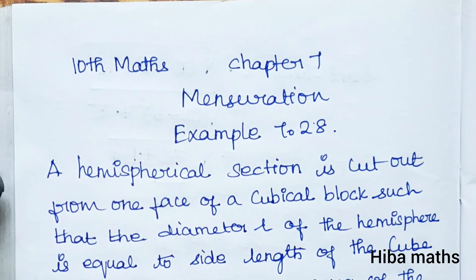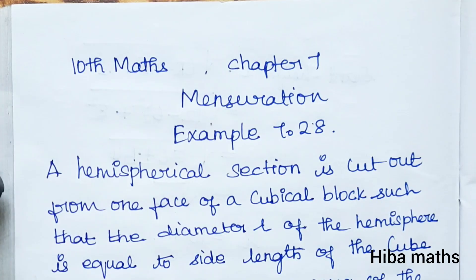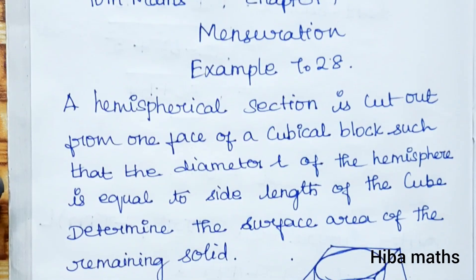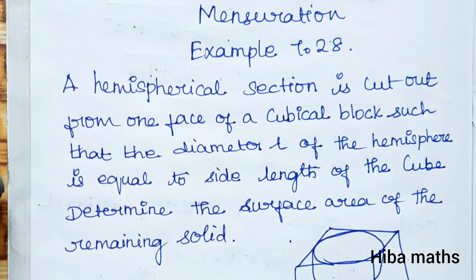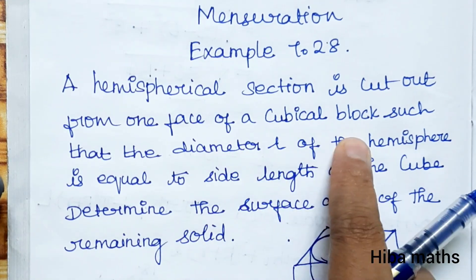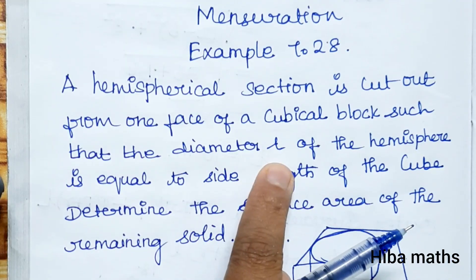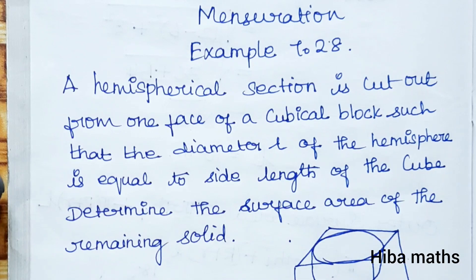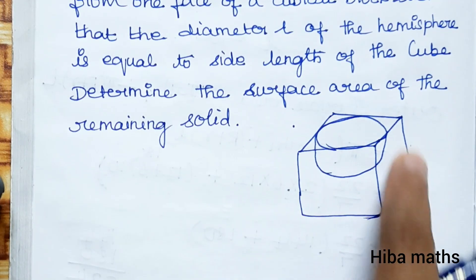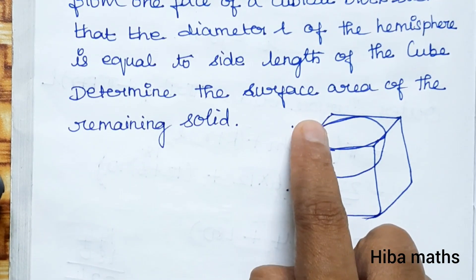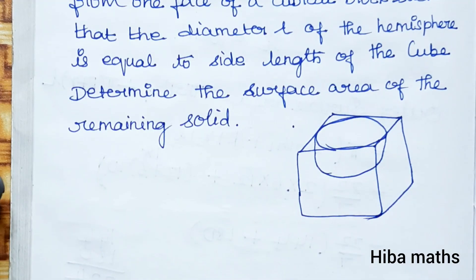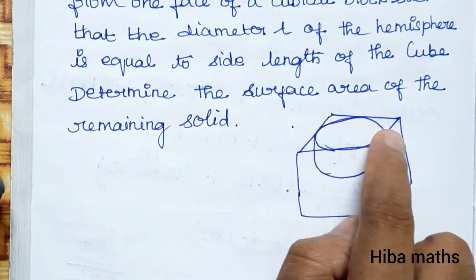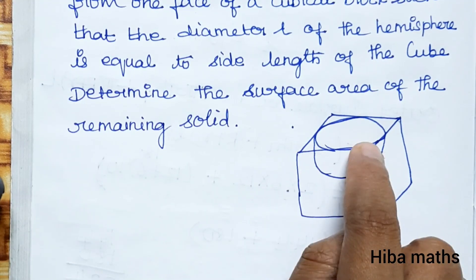Hello students, welcome to Heba Max 10 Standard, Chapter 7 Mensuration, Example 7.28. In the problem, a hemispherical section is cut out from one face of a cubical block such that the diameter l of the hemisphere is equal to the length of the cube.